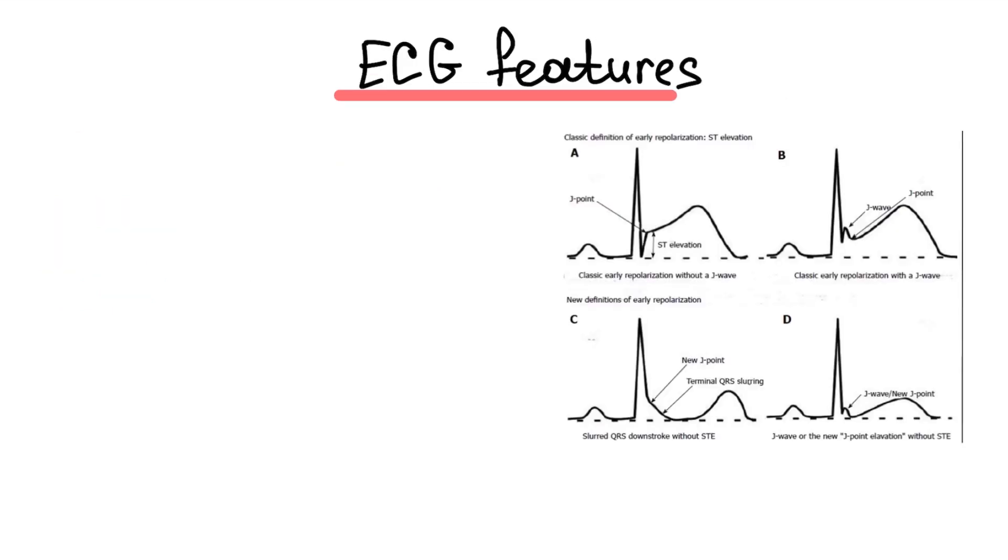In the most literature sources, early repolarization is defined as a J-point elevation more than or equal to 1 mm in 2 or more contiguous leads on the ECG.